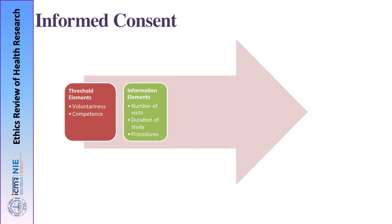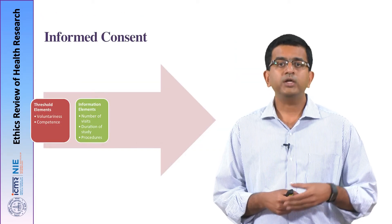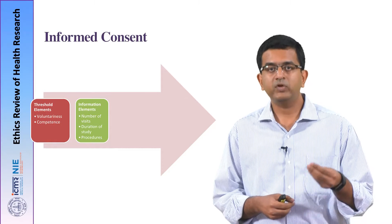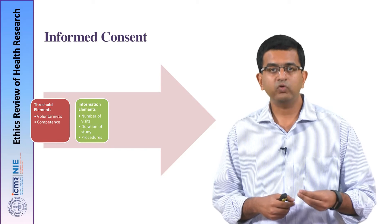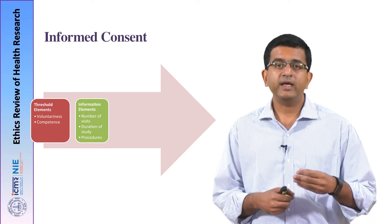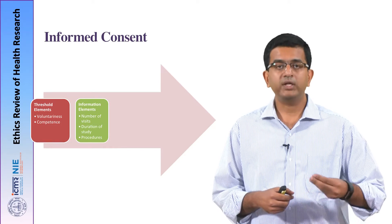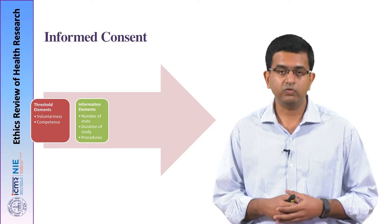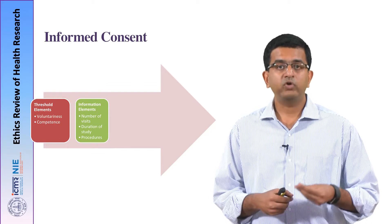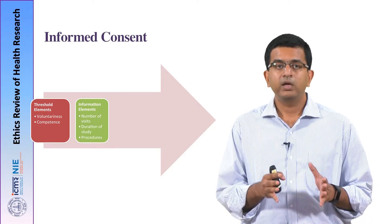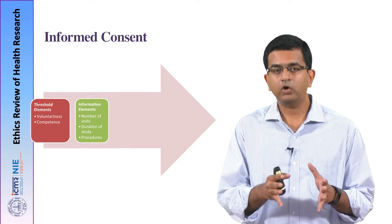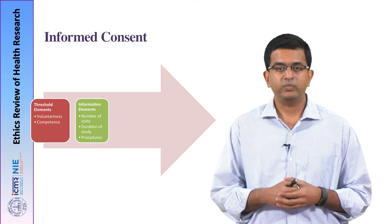Then we have information elements — facts related to participation in the study. For example, what procedures will happen if the participant enrolls, how many times will they visit the study site, what tests will be done on them, and will they have to take any medicines. All this information must be provided in a very easily understandable manner as the second element of the informed consent process.